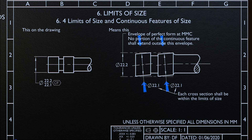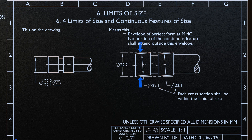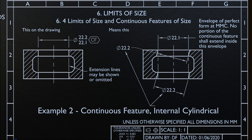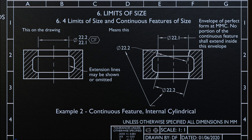In this example, you can see that each cross-section of the object lies within the limit of the size. To accept this part, no portion of the continuous feature shall extend outside this envelope. Taking a look at the second example, for continuous features with the internal cylindrical feature, you will find this on the drawing. Note that extension lines may be shown or omitted.